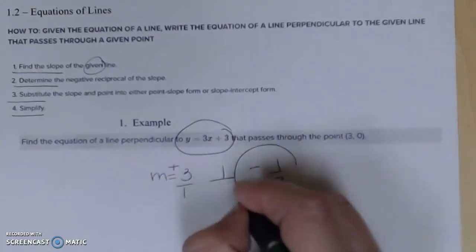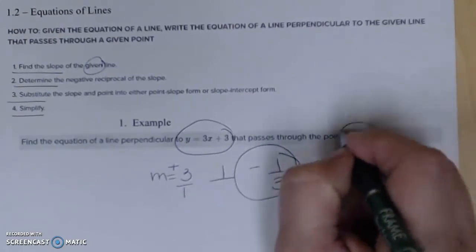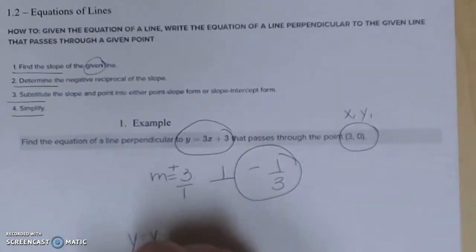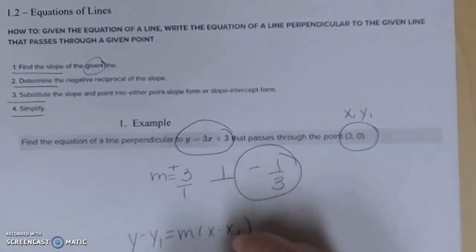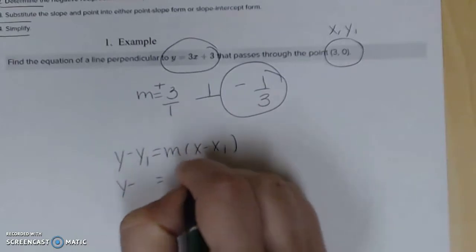Flip it and change the sign. This one was positive, so the new one would be negative. This is the slope I want to use for working out my equation. Now I also want to go through the point (3, 0). This would be my x₁ and my y₁.